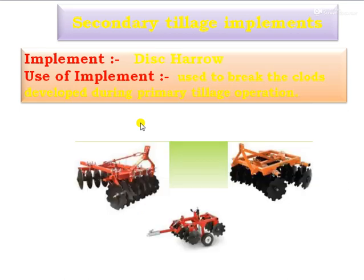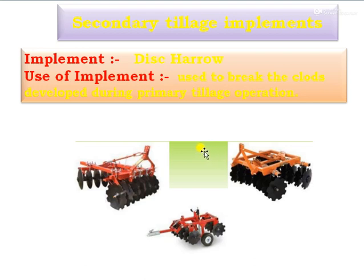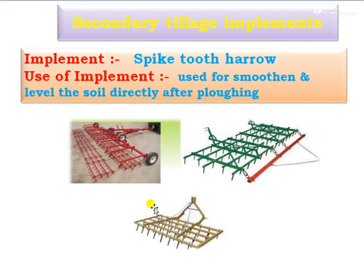Next is the disc harrow. This implement is used to break the clods developed during primary tillage operations. Especially during secondary tillage, it should be used for mixing of fertilizers or organic manures, as well as incorporation or breaking of weeds and crop residues, and incorporating them into the soil.